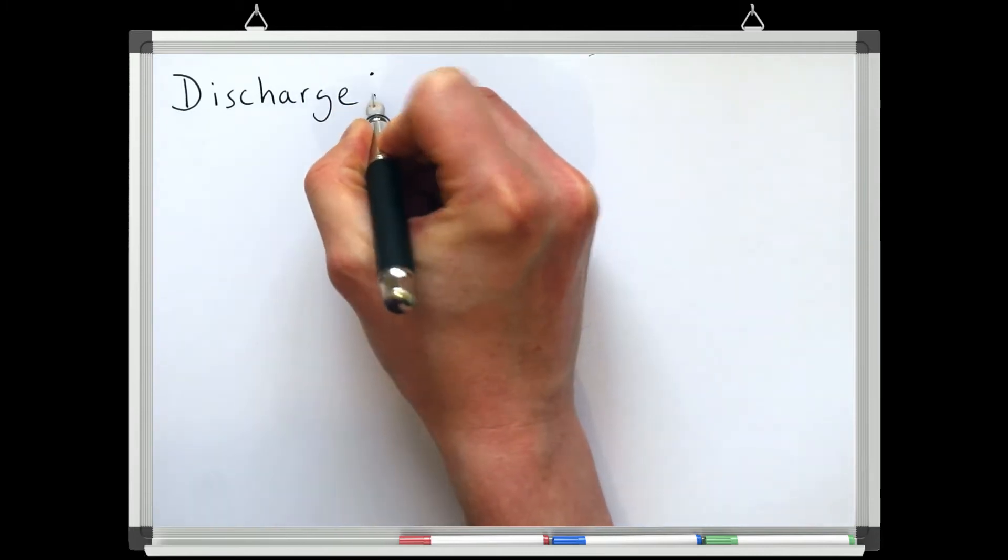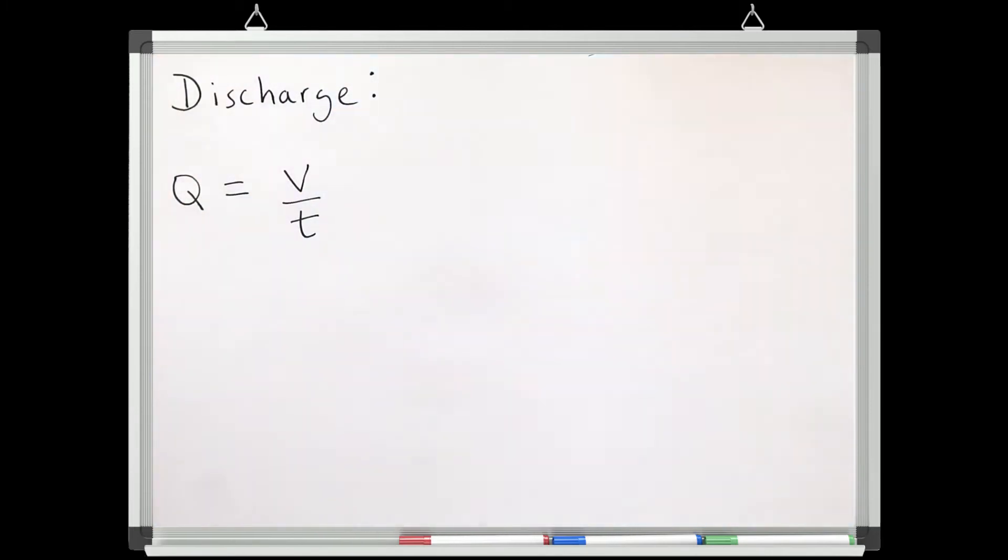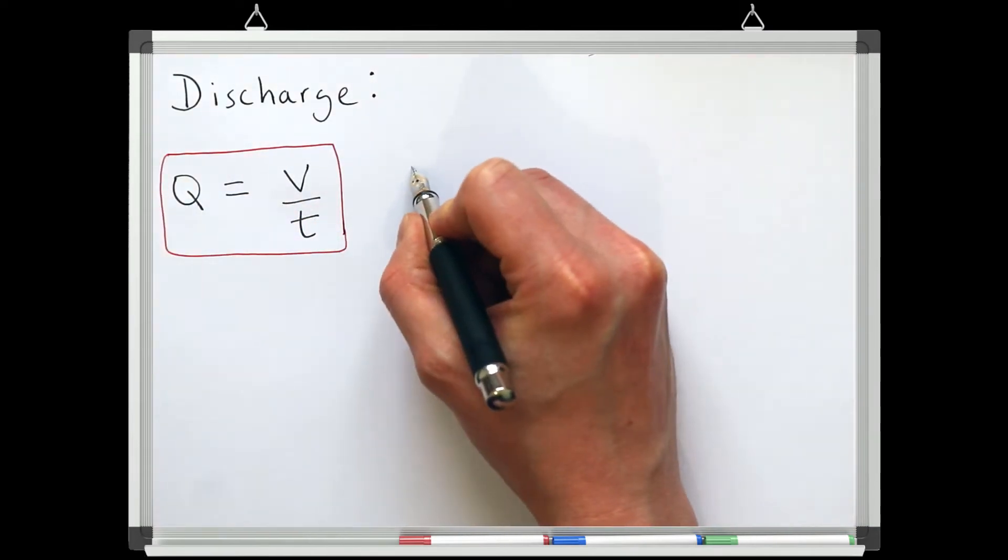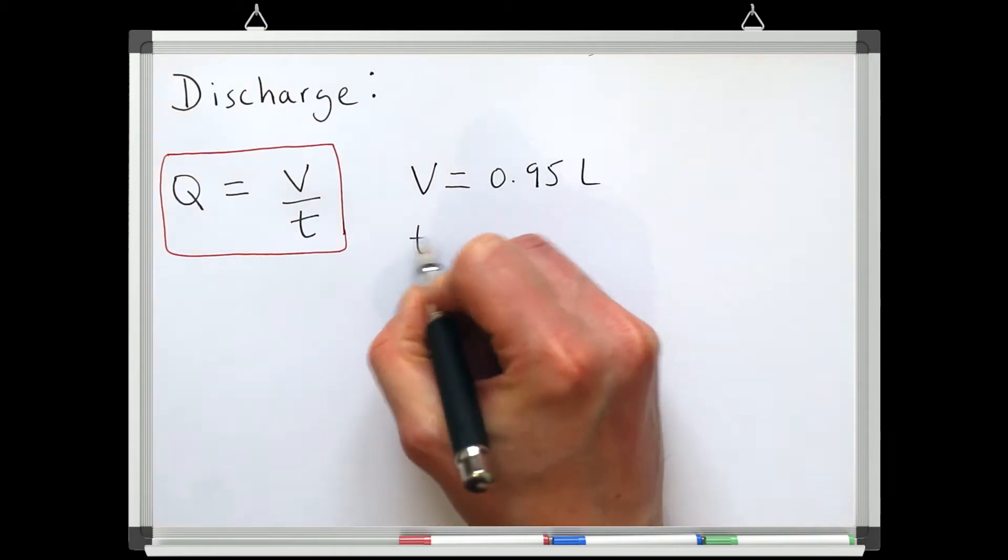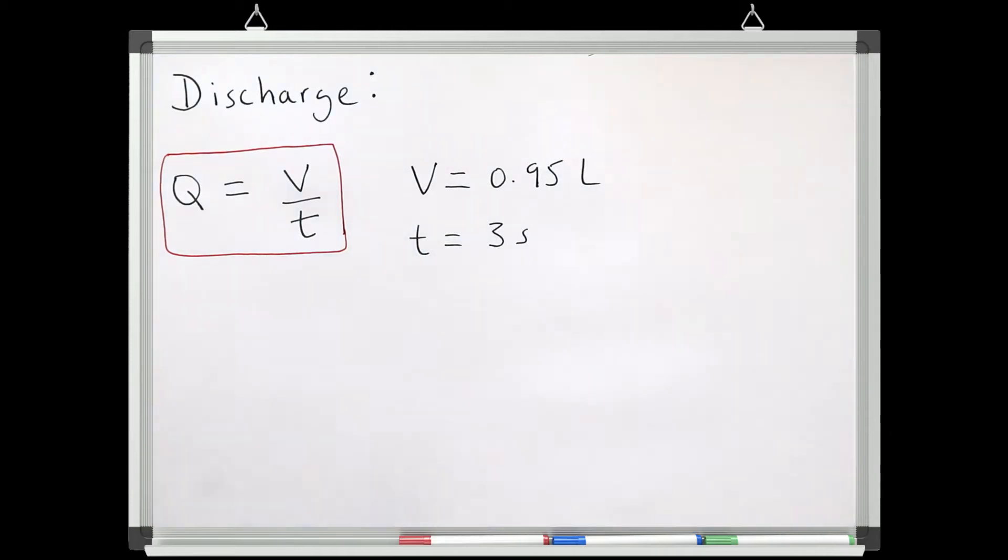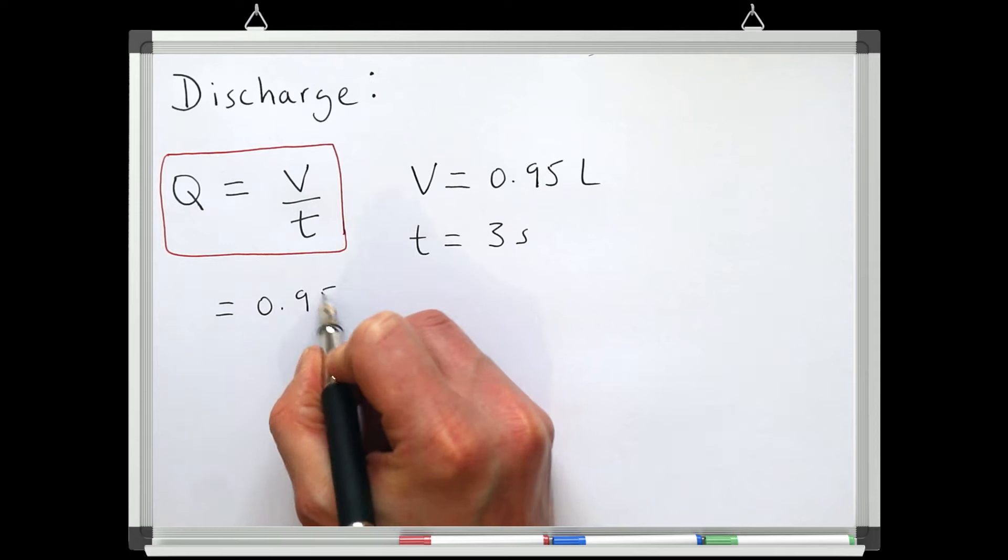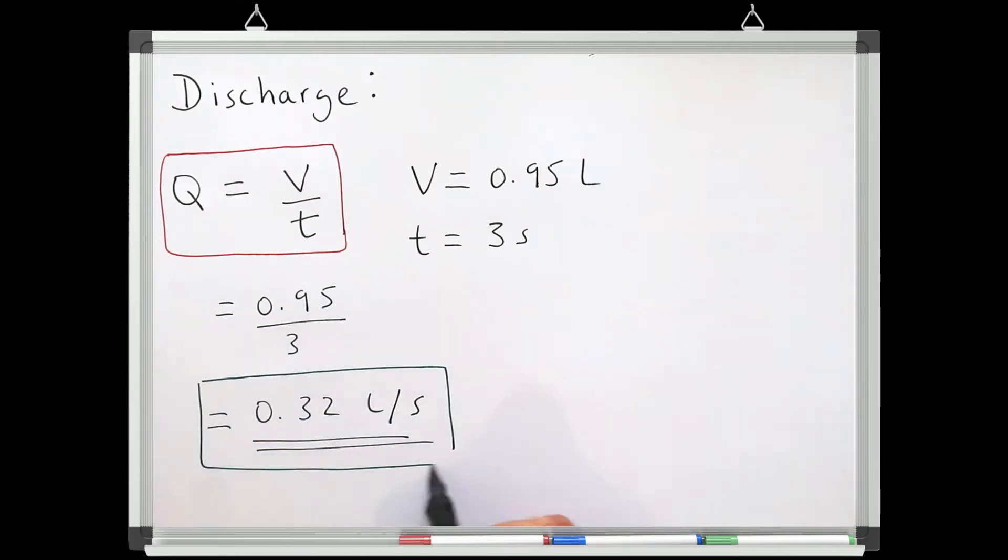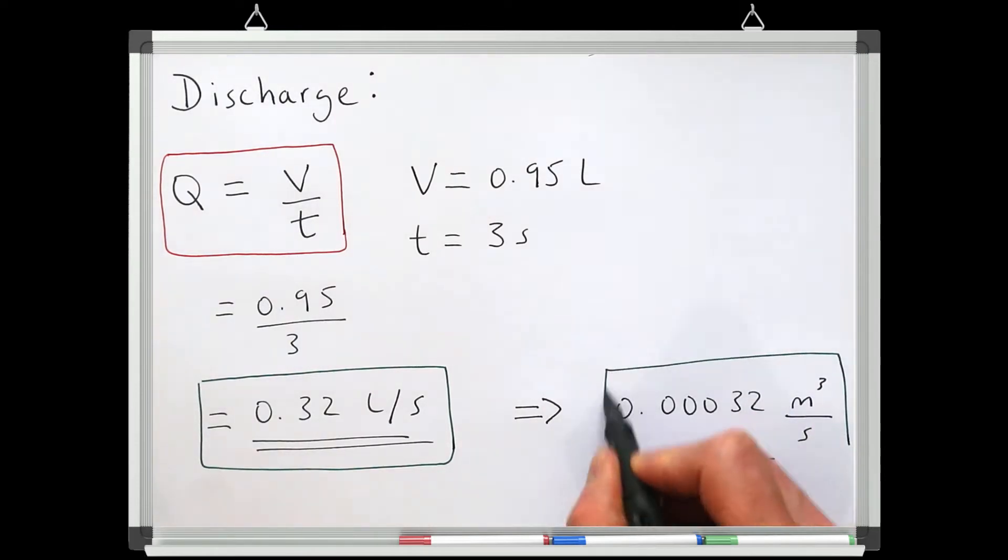So to calculate the discharge I simply have to divide the volume by the time. We collected 0.95 liters and it took three seconds to collect that volume. So if we divide the volume by the time we get a discharge of 0.32 liters per second, meaning 0.32 liters is passing through the flume every second. We can convert this into meters cubed per second by dividing the final answer by 1000 as there is a thousand liters in a meter cubed.